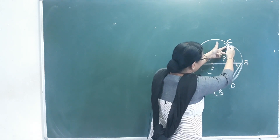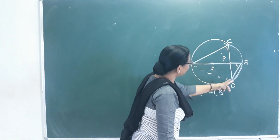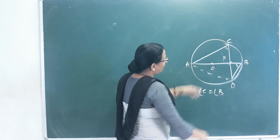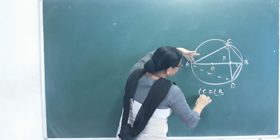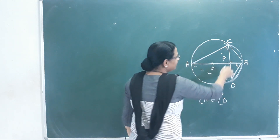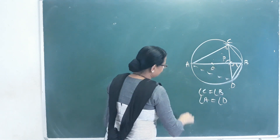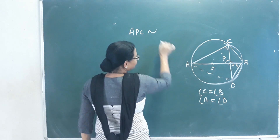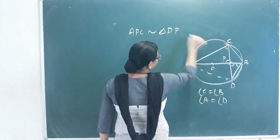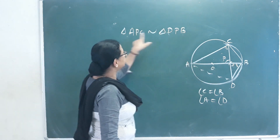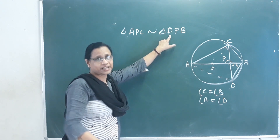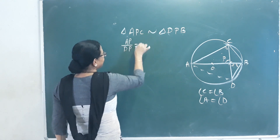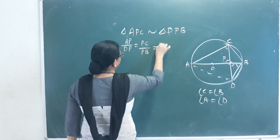Here C is equal to B. If you join BC, you will see that angle A and angle D are the same. This is vertically opposite angles. These two triangles are similar. Triangle APC is similar to triangle DPB. Sides are proportional: AP/DP = PC/PB = AC/BD.